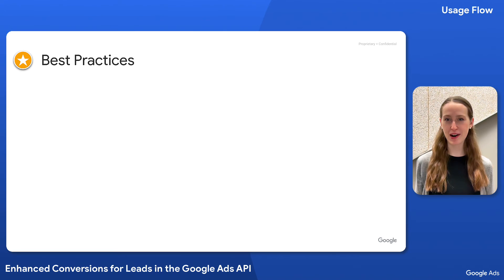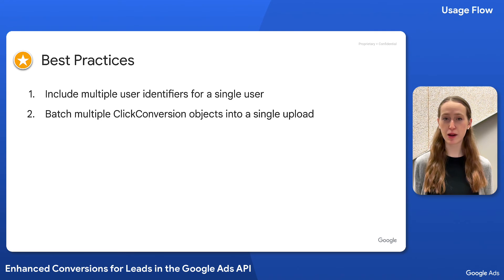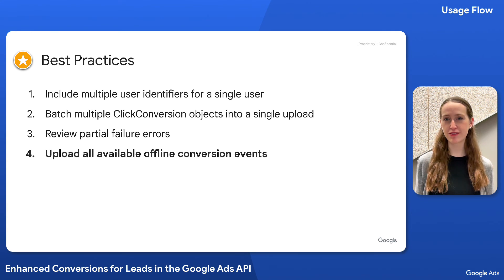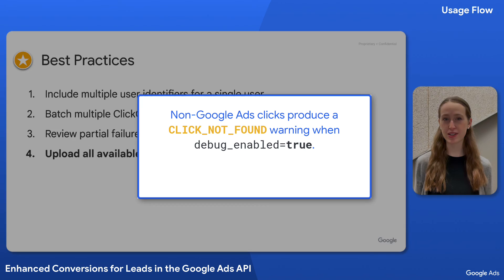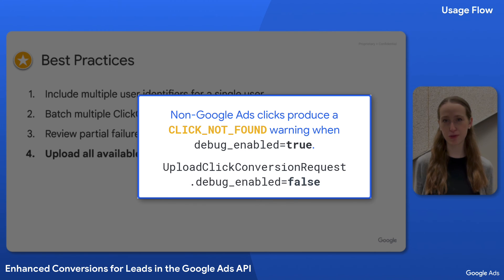Before we wrap up, a few best practices for using enhanced conversions for leads. You should include multiple user identifiers for a single user if you have them, combine multiple click conversion objects in a single upload, and review partial failure errors while implementing your integration. In addition, we recommend uploading all available offline conversion events, even if they didn't come from Google Ads, to ensure full and accurate conversion reporting. Note that any clicks that didn't come from Google Ads will produce a click not found warning in the offline data diagnostics report, which is expected and can be avoided by setting the debug enabled field of the upload request to false.